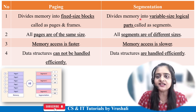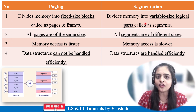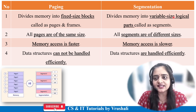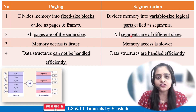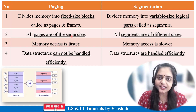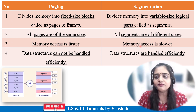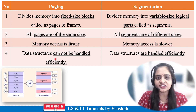On the other hand, in segmentation, the operating system divides the complete memory into variable-size or dynamic parts as per the requirement of each particular process, and these parts are called segments. So all segments are of different sizes — segmentation uses dynamic partitions. Due to fixed partitions in paging, memory access is faster, whereas in segmentation, memory access is slower.